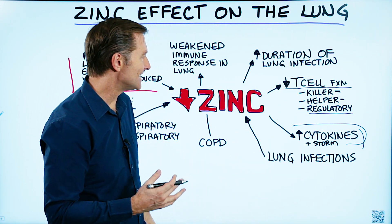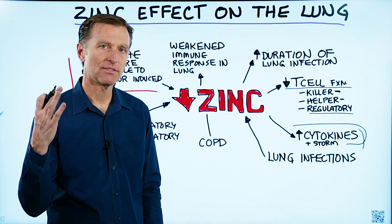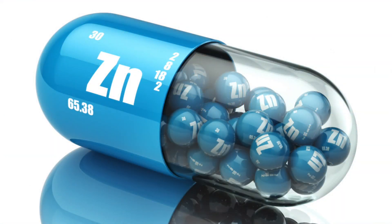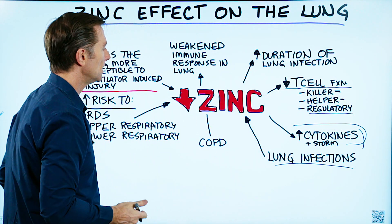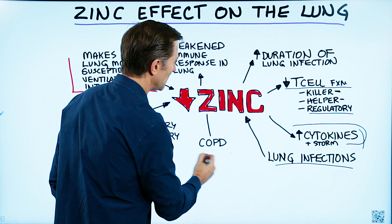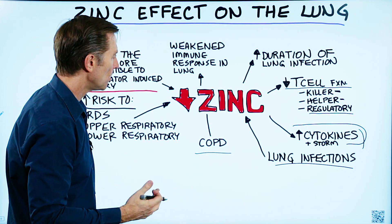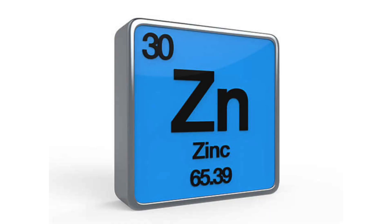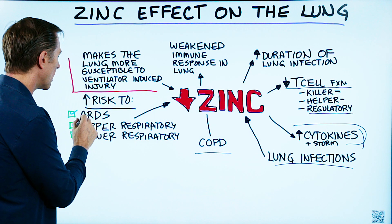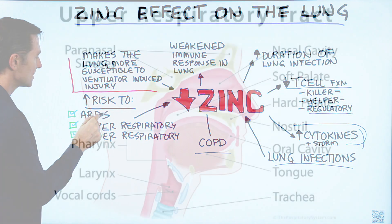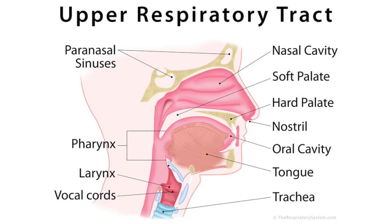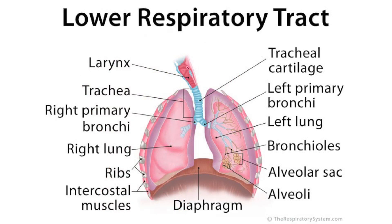Zinc is a great anti-inflammatory in general, and if you're deficient in zinc, your risk for getting lung infections does go up. When you have conditions like COPD — chronic obstructive pulmonary disease — you're nearly always deficient in zinc. Your risk also goes up for ARDS, which stands for acute respiratory distress syndrome, as well as upper and lower respiratory tract infections.